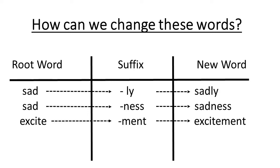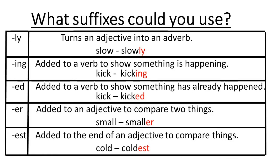And finally, using the root word 'excite' and adding the suffix '-ment' would create the new word 'excitement'. So what suffixes could you use, Key Stage 1? Adding '-ly' turns an adjective into an adverb — for example, 'slow' changes to 'slowly'. '-ing' could be added to a verb to show something is happening — for example, 'kick' is changed to 'kicking'. '-ed' could be added to a verb to show something has already happened — for example, 'kick' is changed to 'kicked'.